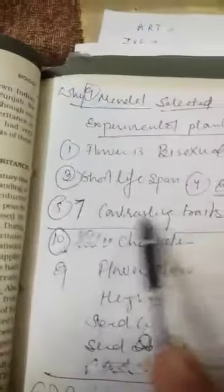And then it comes the seven contrasting traits. Contrasting means opposite.